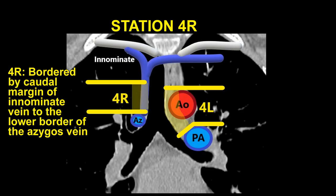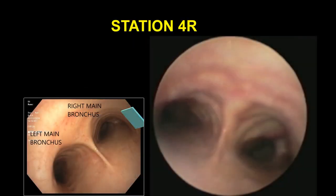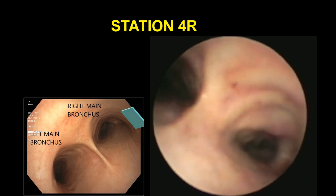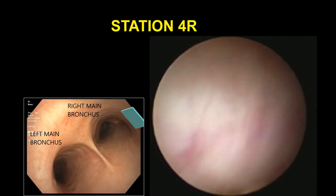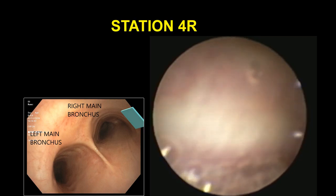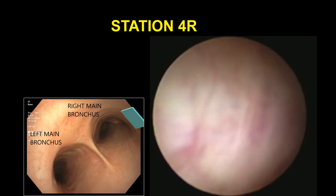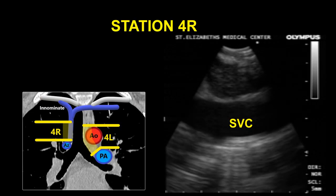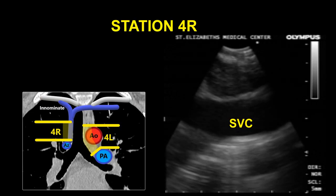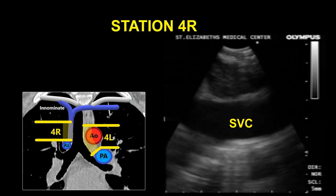Station 4R, the right lower paratracheal region, is bordered by the caudal margin of the innominate vein to the lower border of the azygous vein. To visualize this station, the EBUS scope is placed proximal to the main carina with the probe facing towards the right anterolateral wall of the trachea, scanning from the 3 o'clock position towards the 12 o'clock position in counterclockwise fashion. In this video, the probe is oriented anterolaterally so that the lymph node can be seen superficial to the superior vena cava.